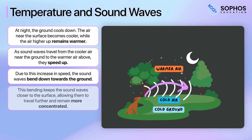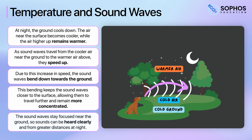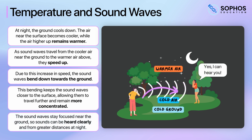This bending keeps the sound waves closer to the surface, allowing them to travel further and remain more concentrated. Because the sound waves stay focused near the ground, sounds can be heard more clearly and from greater distances at night. By understanding this concept of refraction, we can better grasp how environmental factors influence sound transmission and why we experience differences in sound clarity at different times of the day.